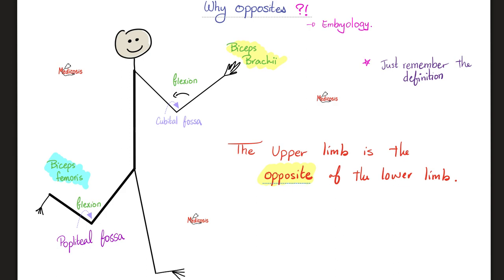Why? Embryologically speaking, when you were a baby in your mother's womb, your upper extremity and lower extremity rotated in opposite directions. That's why the cubital fossa is in front of your elbow, but the popliteal fossa is behind your knee. If you follow the definition — flexion decreases the angle between two parts of the body — it makes sense, but the approximation of ventral surfaces doesn't hold for the lower extremity.